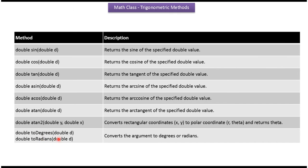toDegrees method converts the argument to degrees. toRadians method converts argument to radians.